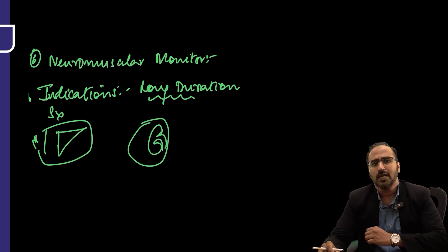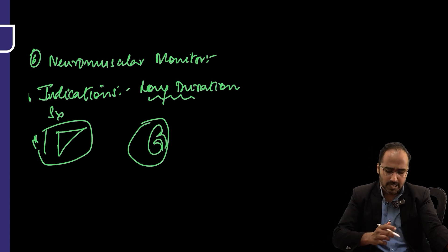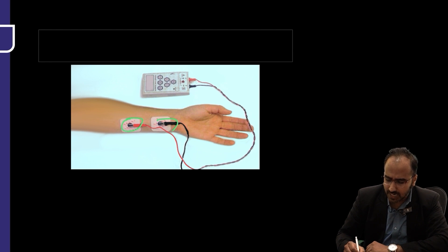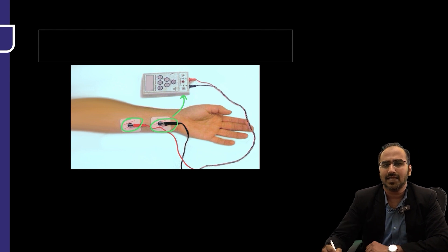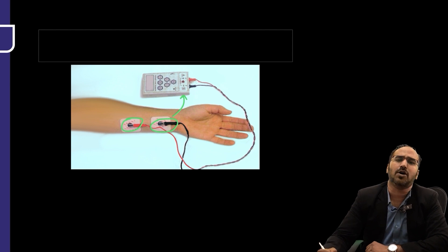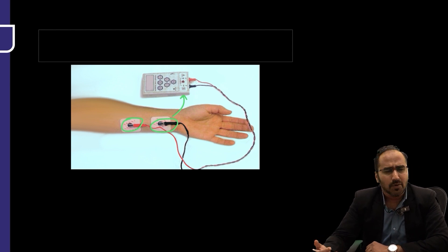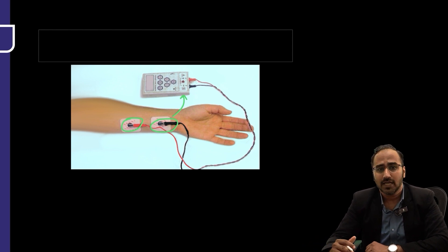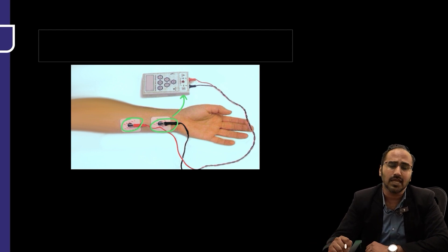In neuromuscular monitoring, we place an electrode on the hand, connected to a nerve stimulator. We then stimulate the nerve and check for the response. There are many monitoring methods: single twitch, tetanic stimulation, post-tetanic facilitation, train of four, and double burst. The most commonly used is the train of four — TOF.